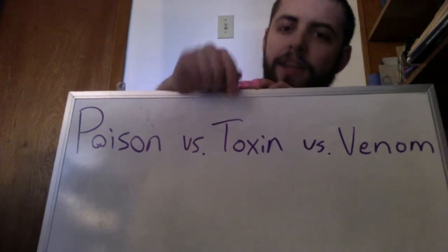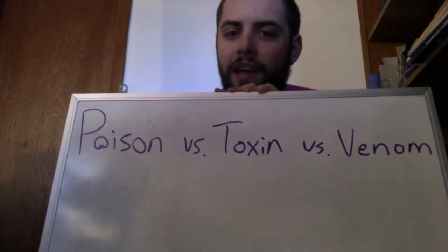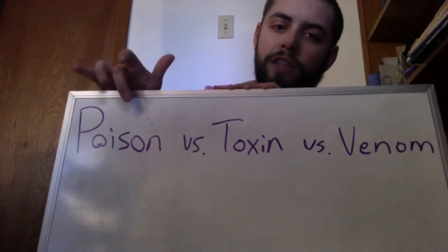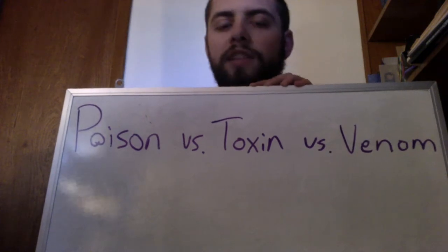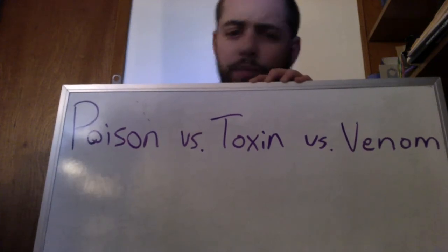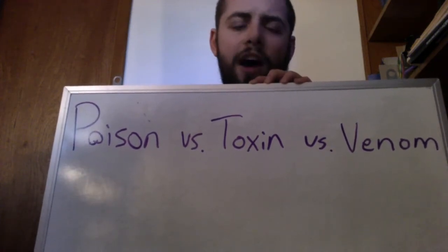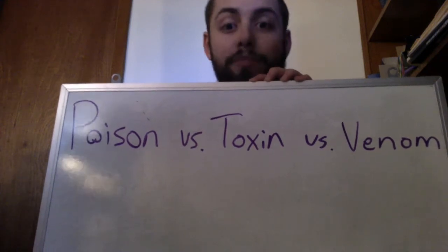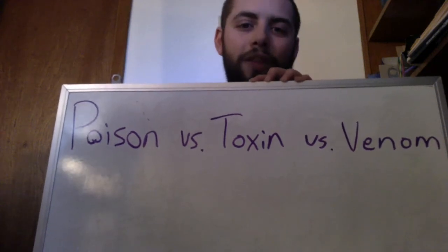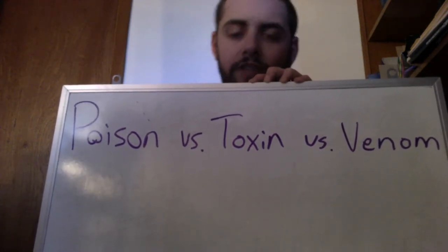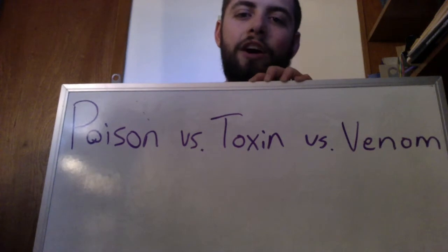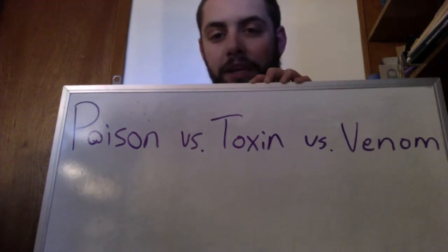A toxin is something that the organism makes as a defense — so it's a kind of poison, but a specific kind that the organism produces. For example, if you can't eat bad fish, it's poisonous — really, it's a toxic fish. That toxin is a defense mechanism to keep predators from eating it. That's usually why they're bright colors. Poison dart frogs are a little bit of a misnomer — they're actually toxic, because they are colorful and have toxins because they don't want to be eaten.